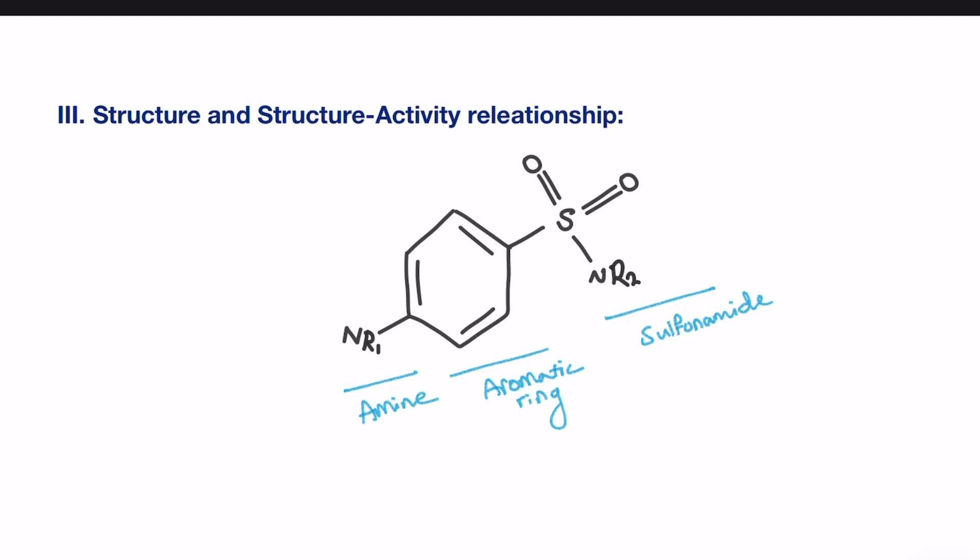All sulfonamides share key features in order to obtain their optimal activities, which include both the sulfonamide and aromatic ring are essential for the activity. So they must be present in all sulfonamides. Also, in the benzene ring, you can see the para-amino group attached here, which is also important for the activity and must be unsubstituted. So that means R1 should be a hydrogen.